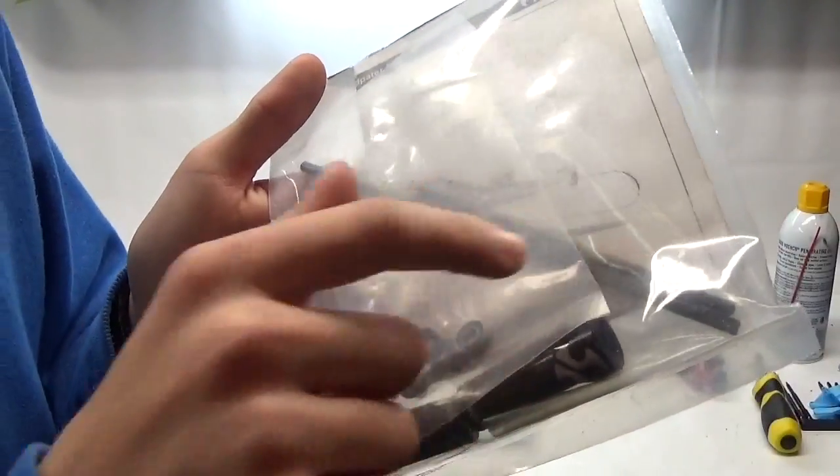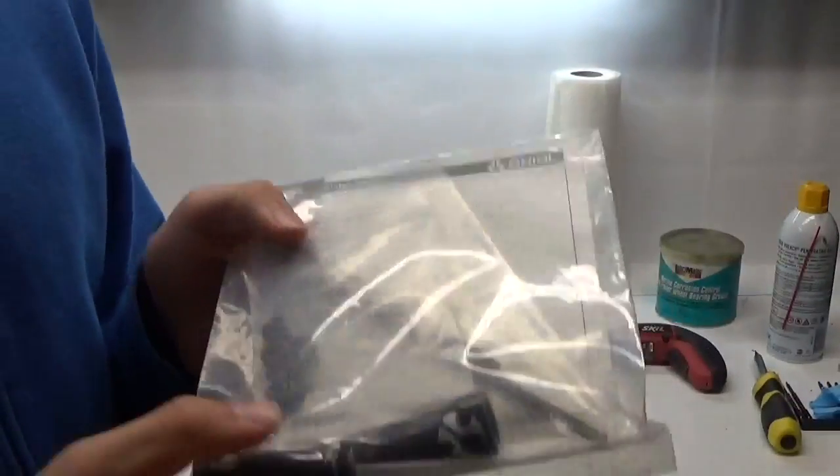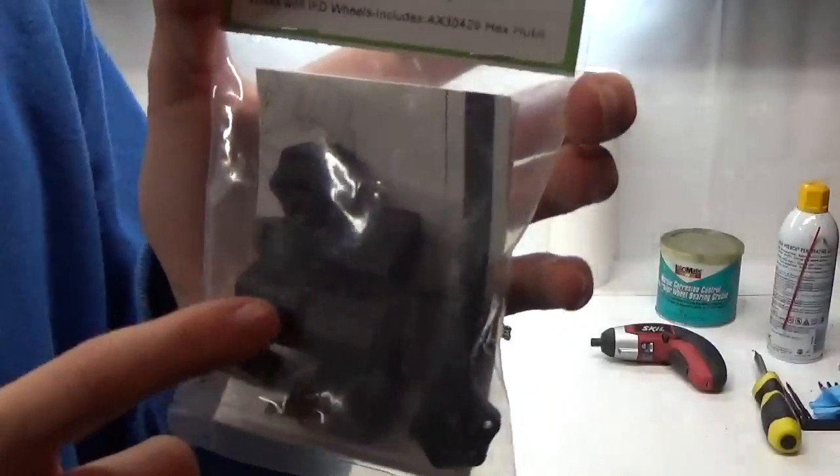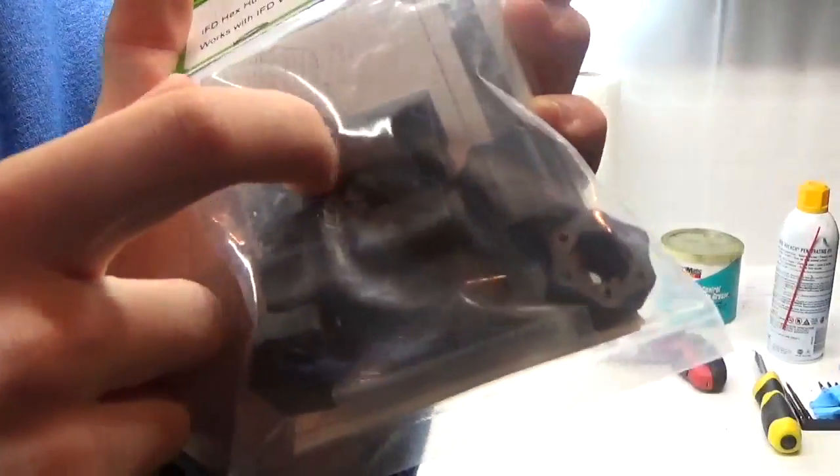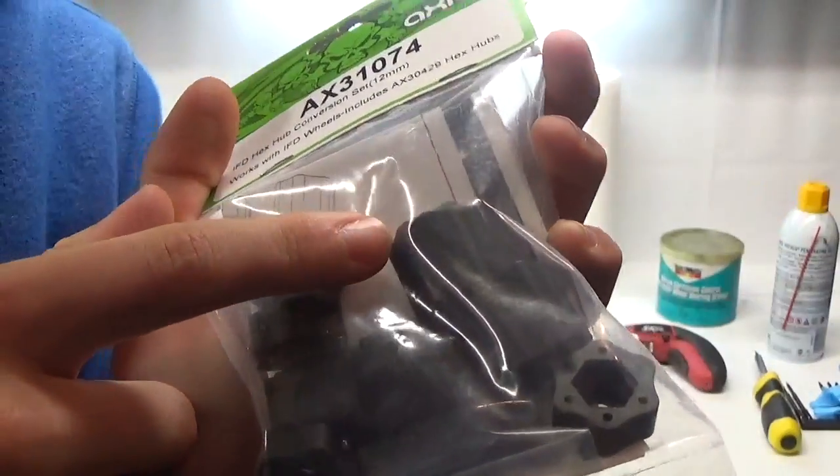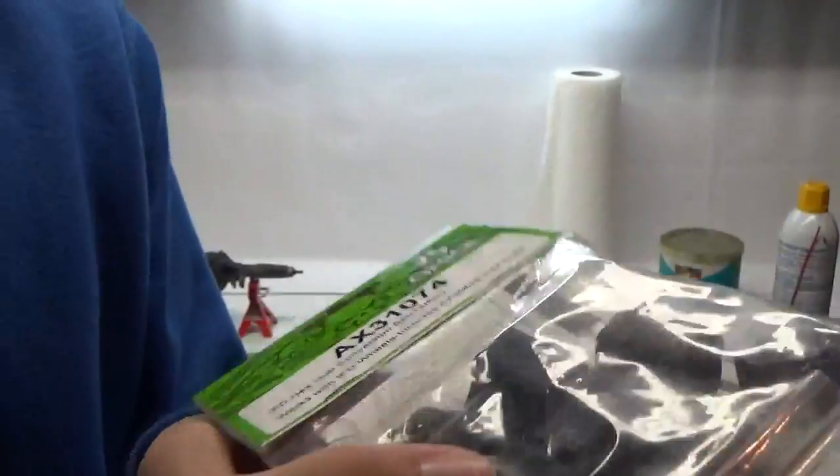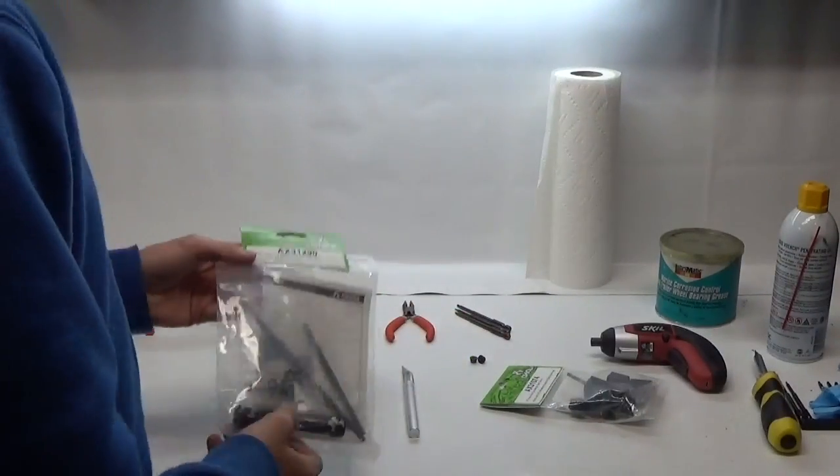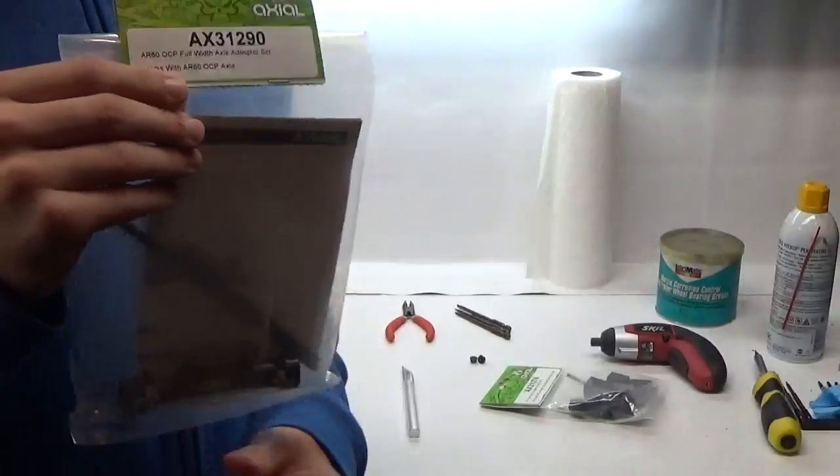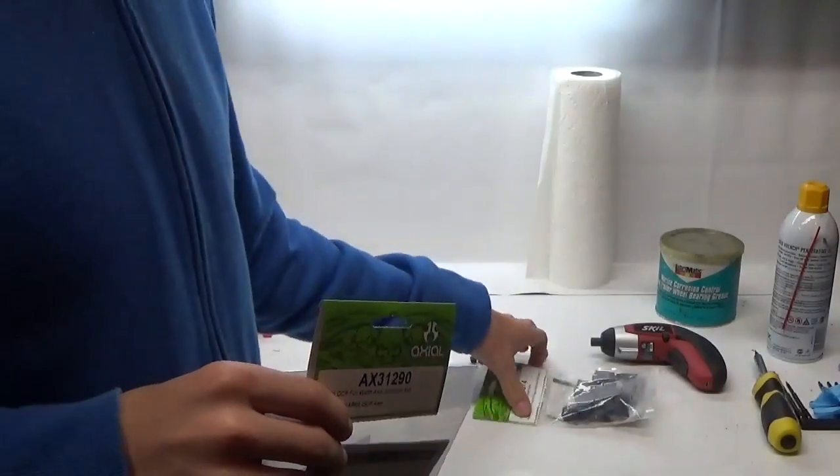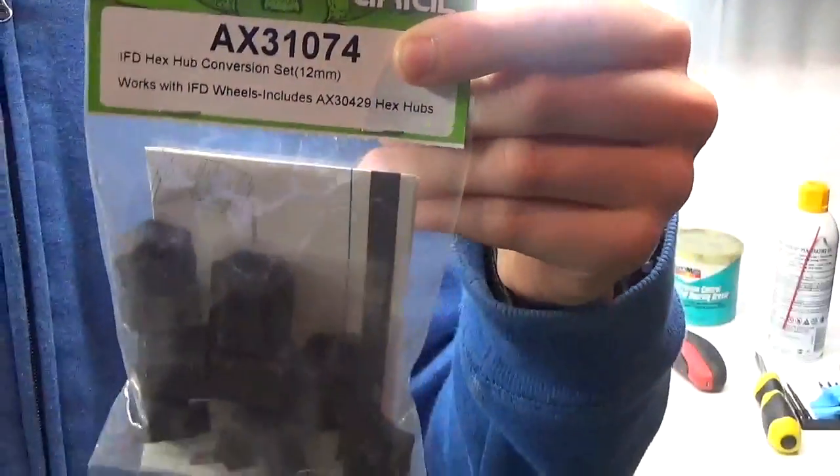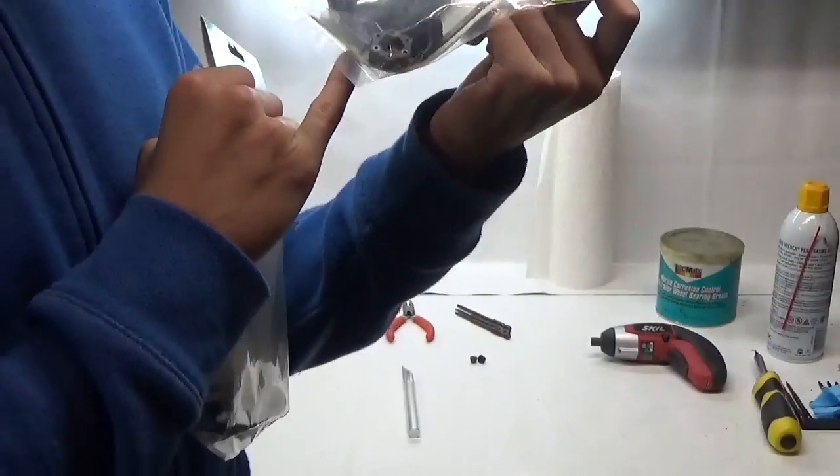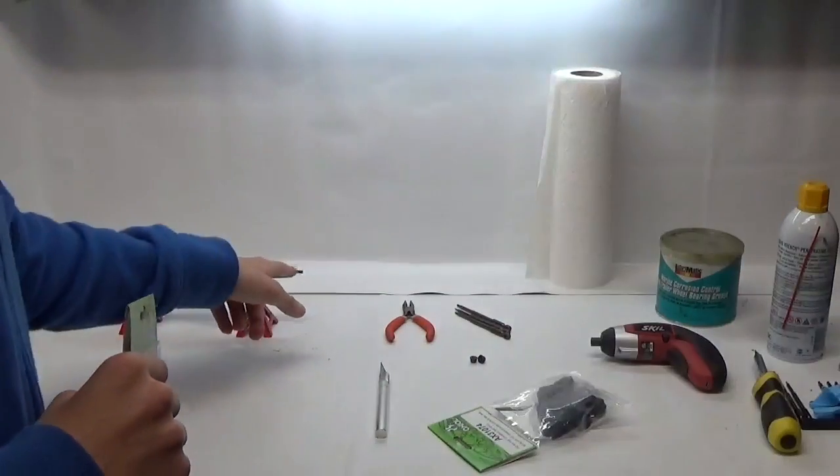You also get longer axle shafts because what this kit does is on the Axial Yetis, when you get them, they have a wide hex hub on the rear rims, on their IFD rims that they sell, and on the front end they have this narrow one. So when you get this kit, if you want to have the rear and front widths the same you're going to have to purchase this also. This is just four of the wide ones and four of the narrow ones and then you get hex adapters that go on the end right there.